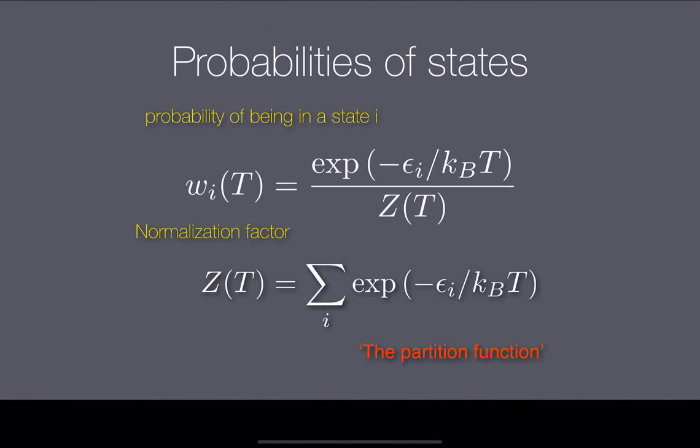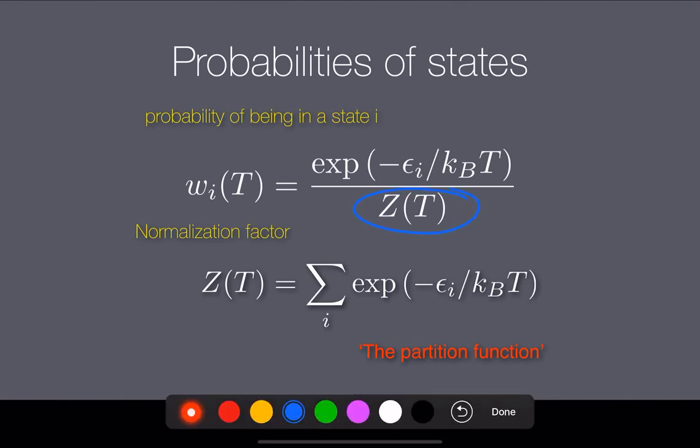By far the easiest way of normalizing something — if I have properties for, say, 10 different states — is to just sum up all those states and put that sum in the denominator. If we put that sum in the denominator, I'm guaranteed that when I take the sum of all these things, they will sum to 1. So I have proper probabilities that sum to exactly 1.0. This capital Z of T here is a fairly boring sum — literally a sum over the Boltzmann factors for every single individual state i, taken over all possible states in the system.